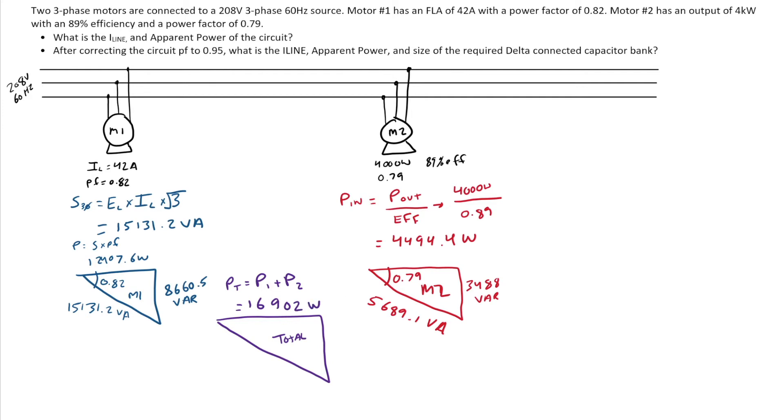Same thing with my VARs. They're both lagging reactive VARs. So I just go 8,660.5 plus 3,488. That gives me my total Q. So Q total, my reactive power total, Q1 plus Q2. In this case, I end up with 12,148.5 VARs.